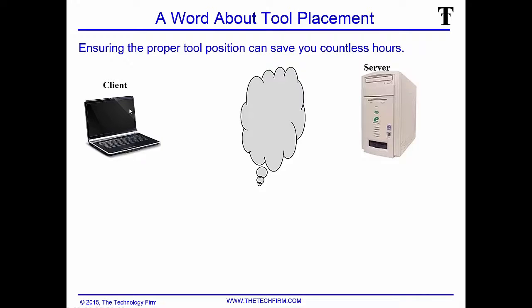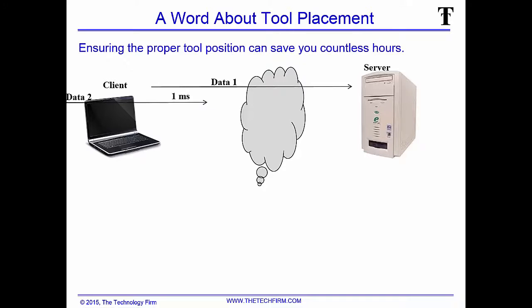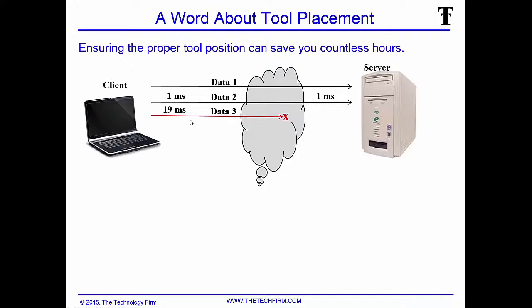Here we go — we got a client on the left, a server on the right, and a big old cloud in the middle. The client sends data packet number one to the server — everything's great — and then we get data packet number two, which has a one millisecond delta time. And then data packet three never quite makes it.